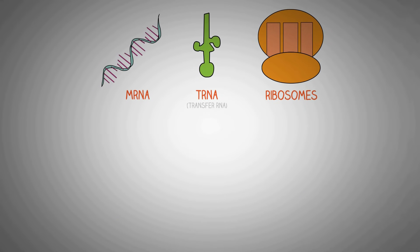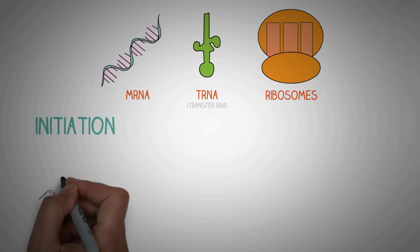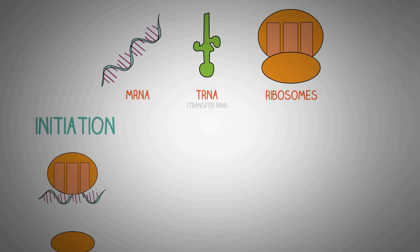So the process of translation occurs in three basic steps. First step is known as initiation in which the ribosome assembles around the target mRNA. In the second step known as elongation,